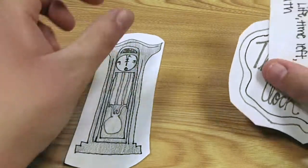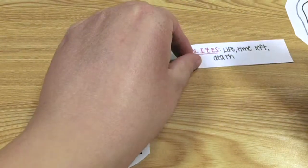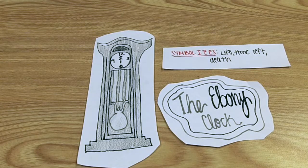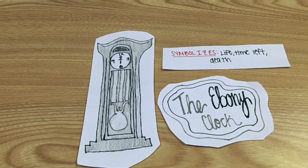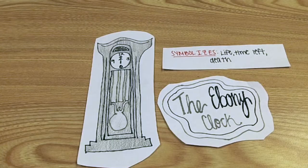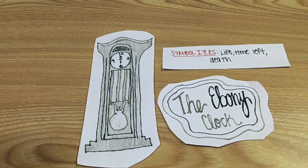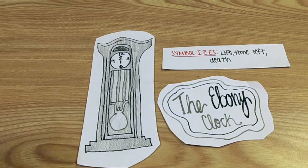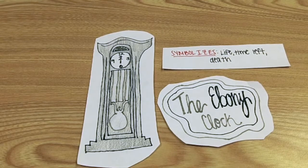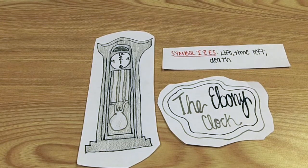Next we'll talk about the ebony clock. It's pretty important that it's ebony because black is the last room, and black is one of the two colors that symbolizes death in this story. It really represents time, since it is a clock, and how we are always running out of time in life. The day starts at 12 o'clock a.m. and ends at midnight, and that's also the symbolism of daytime and time that we'll talk about later when we talk about the rooms.